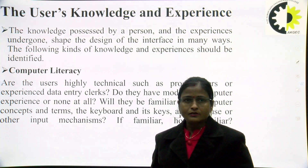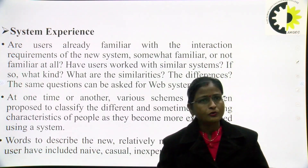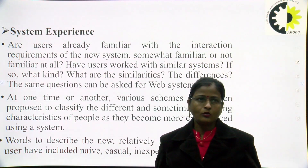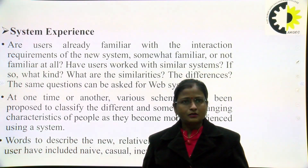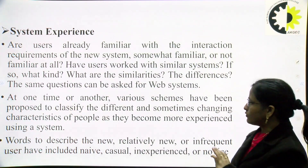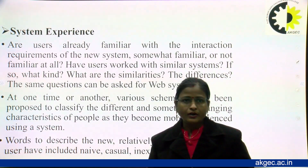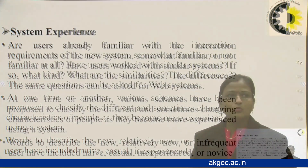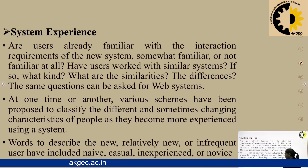The second consideration is system experience — are users already familiar with the interaction requirements of the new system, somewhat familiar, or not familiar at all? Have users worked with a similar system, or another system? What are the similarities and differences? The same questions can be asked for web systems. Various schemes have been proposed to classify the different and sometimes changing characteristics of people as they become more experienced using a system. Words to describe the new or infrequent user include naive, casual, inexperienced, or novice.